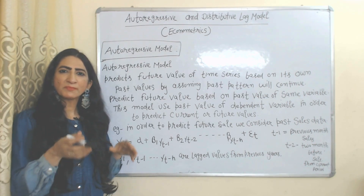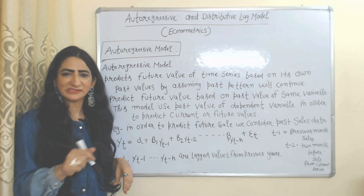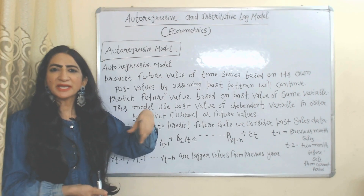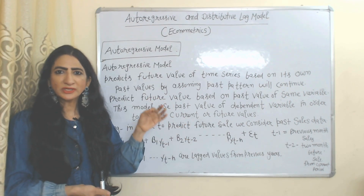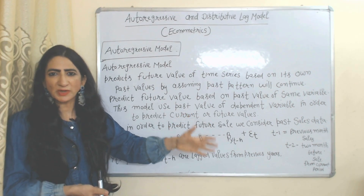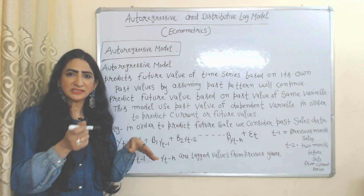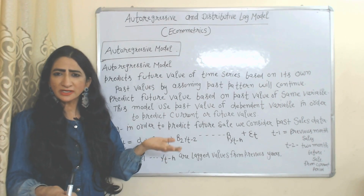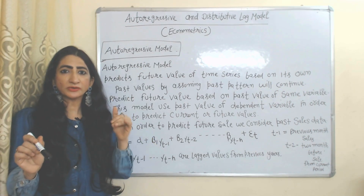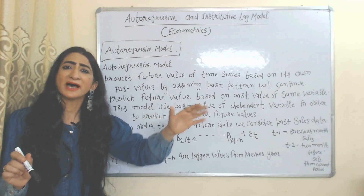The autoregressive model assumes past patterns will remain continuous. That's why the autoregressive model predicts the future or current value of a variable based on its own past values. In other words, the autoregressive model tries to predict the future or current value of the dependent variable based on past values of that same variable.